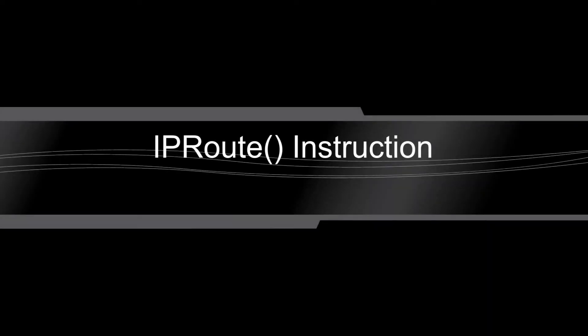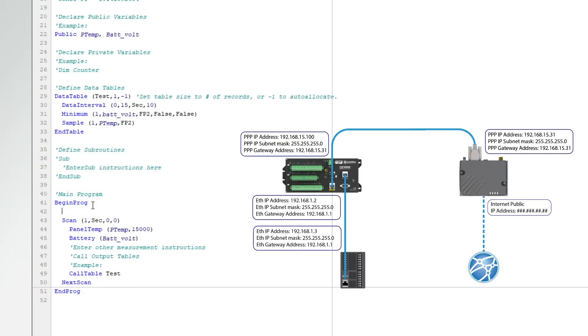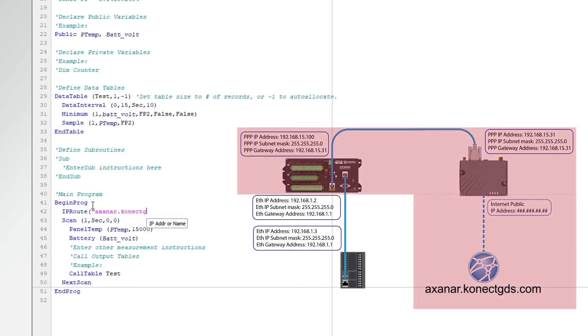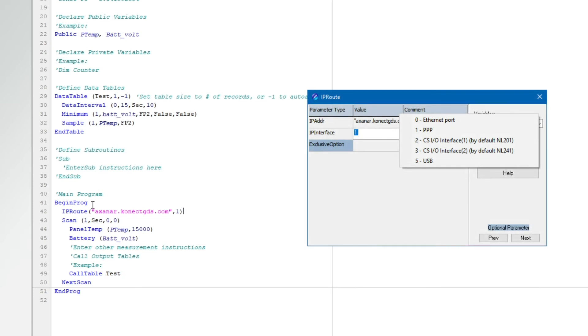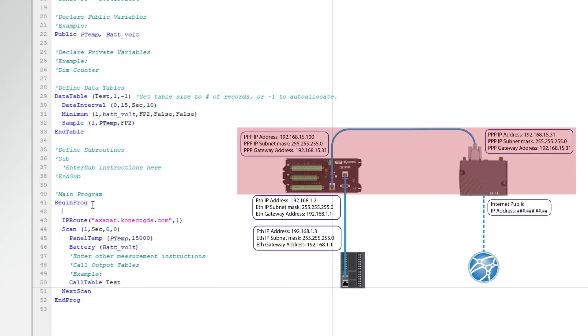I can use the IP route instruction in CRBasic to either change the default interface or specify which interface to use for specific outbound messages. The IP route instruction is used when an IP network other than the default needs to be used. For example, adding the line 'IP route axonar.connectgds.com, 1' tells the datalogger to use the PPP interface for the connection to Axonar rather than Ethernet. However, the default interface is still Ethernet, so the datalogger will still try to connect to the DNS server through Ethernet. One fix is to include another IP route instruction: 'IP route 208.67.222.222, 1' tells the datalogger to access the DNS server through the PPP interface.